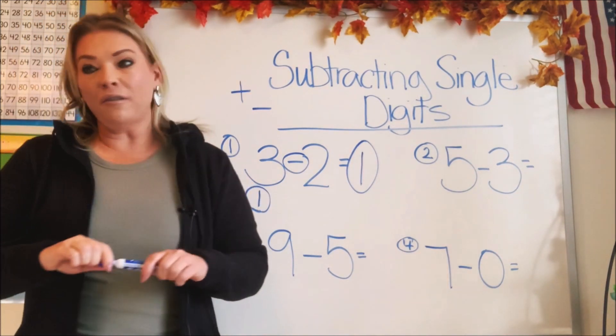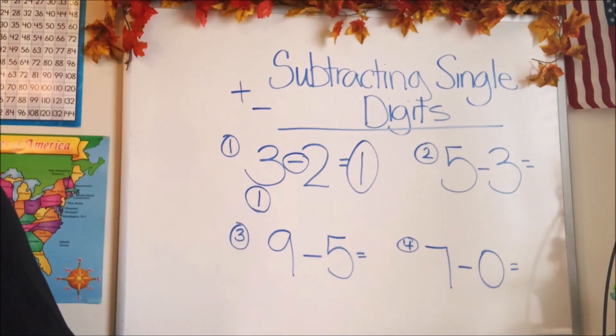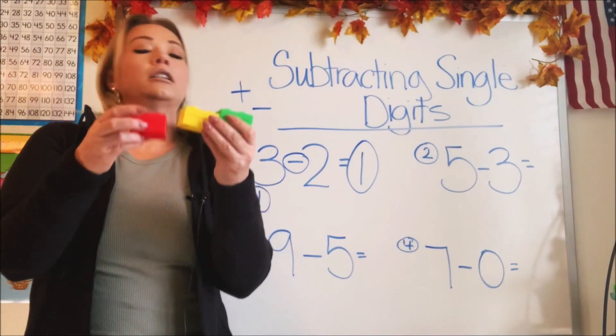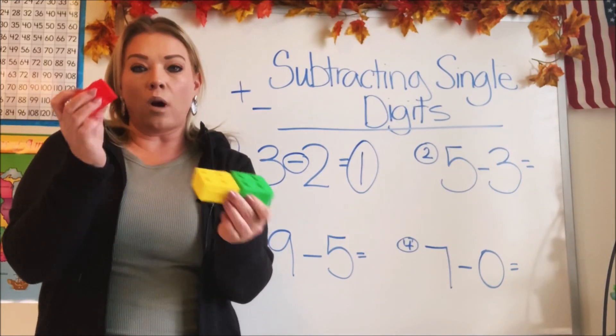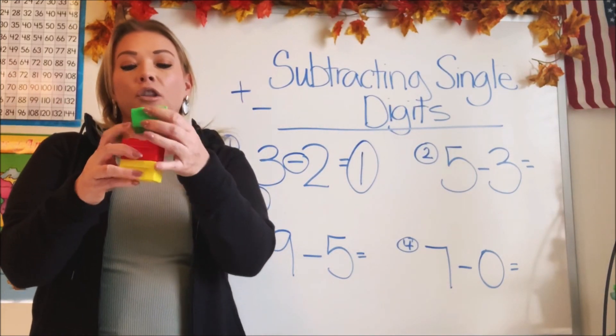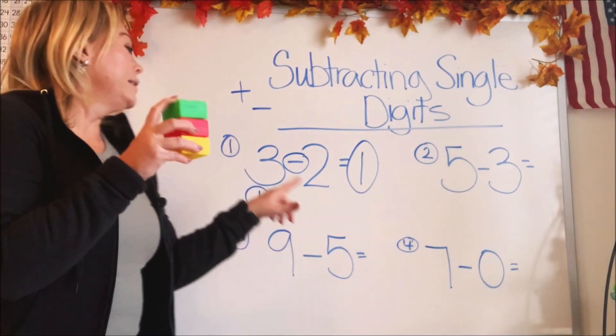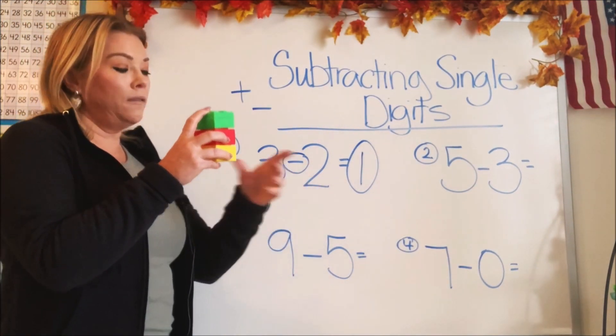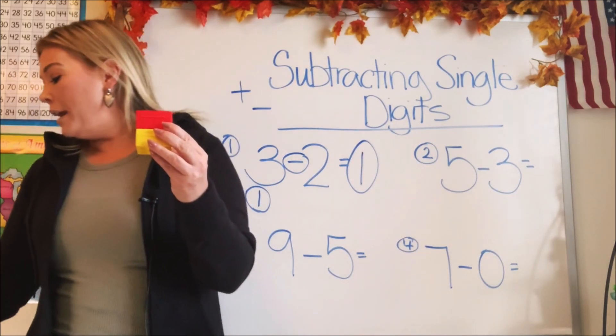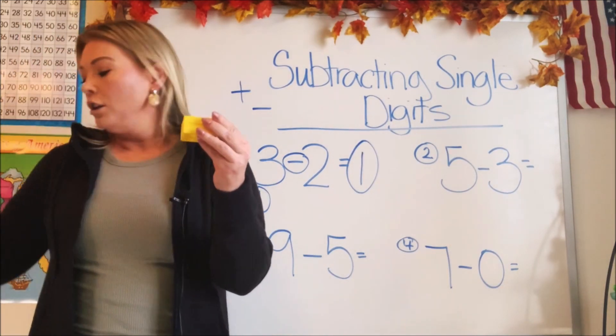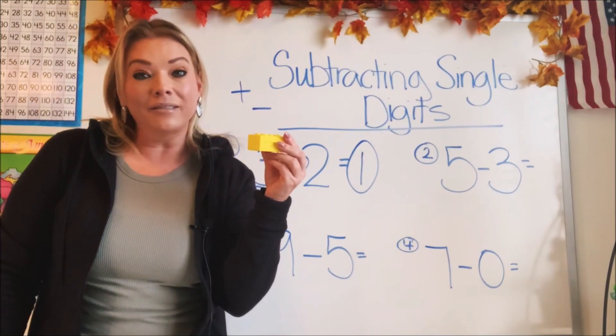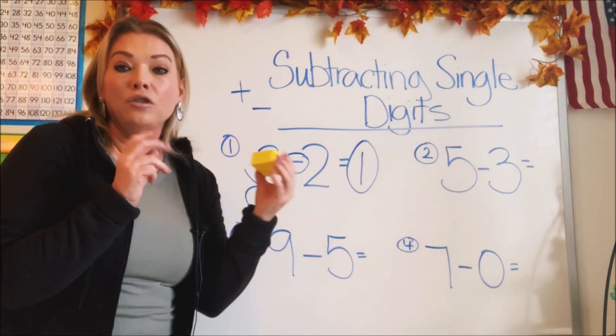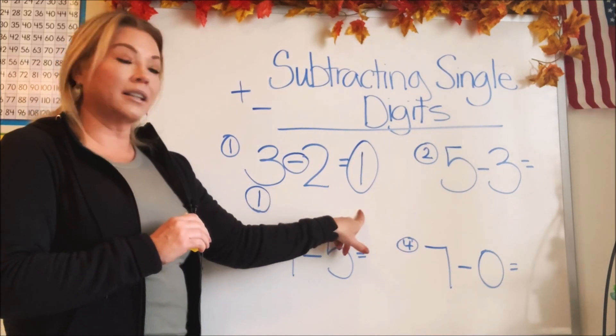Let's try that with a different visual, shall we? I have three building blocks here, right? Three like Lego blocks. One, two, three. Now it says to subtract or take away two of them. So let's take away two. One, two. And how many's left? One. See? So you can use lots of different visuals to find the right answer.